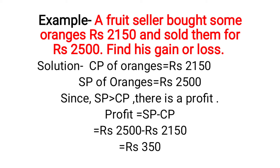Let us understand with the help of one example. A fruit seller bought some oranges for Rs. 2150 and sold them for Rs. 2500. Find his gain or loss. Solution: CP of oranges is equal to Rs. 2150 and SP of oranges is equal to Rs. 2500. Since SP is greater than CP, there is a profit. So profit is equal to SP minus CP, that is Rs. 2500 minus Rs. 2150, which equals Rs. 350. Hence, the fruit seller gains a profit of Rs. 350.